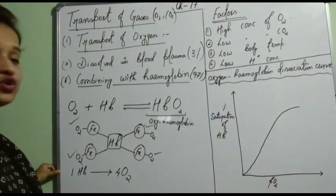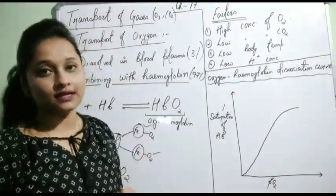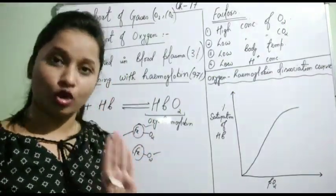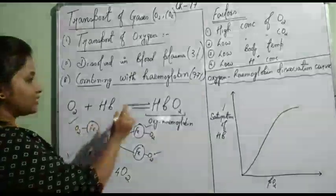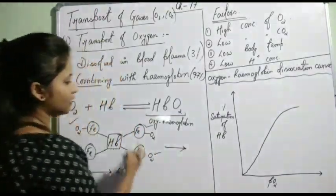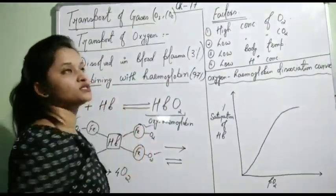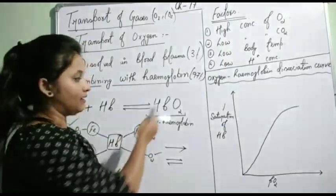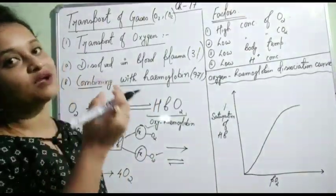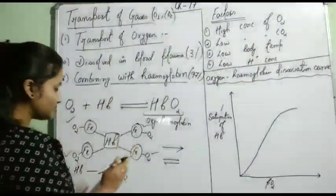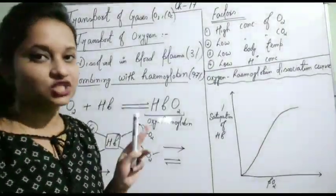Please note this down — this is a frequently asked question in entrance exams and boards. One hemoglobin molecule can bind with four oxygen molecules. Also note the reversible sign used in the reaction: this means HbO2 can also break apart. This reaction is reversible — oxygen can bind and also be released from hemoglobin.